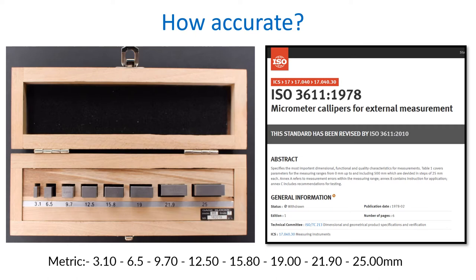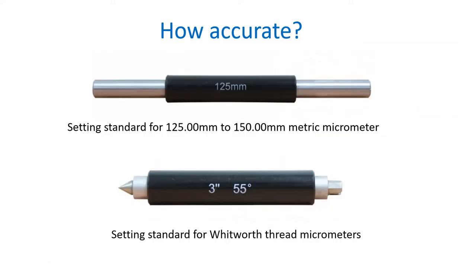Pictured are examples of setting masters shipped with micrometers. Most measurement tools are shipped with some type of tool for setting the zero or checking the range. Depending on the standards you're working under, the setting standards will have to be periodically sent for calibration. This gives you micrometer and measurement traceability in the event of a problem or legal issue.